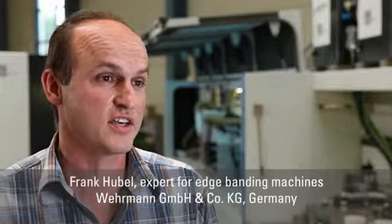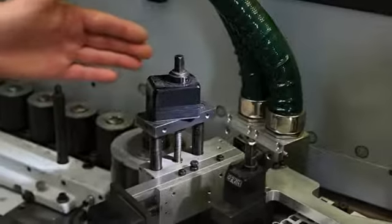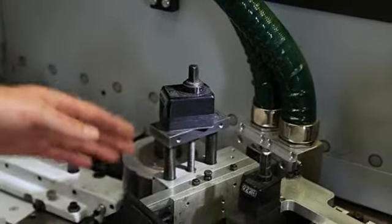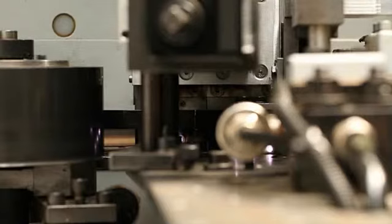The plasma jets are precisely adjusted to the edge width and the production speed. Right here, in place of the glue applicator and directly before the pressure roller, is where the Deustec plasma tool is installed.